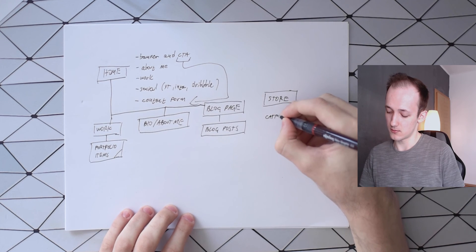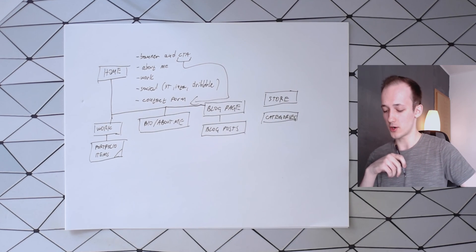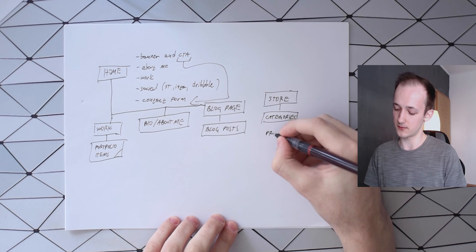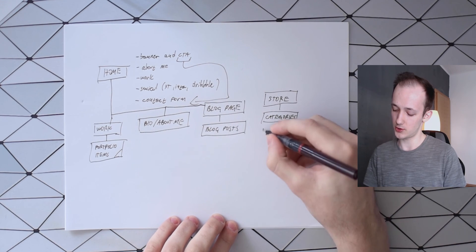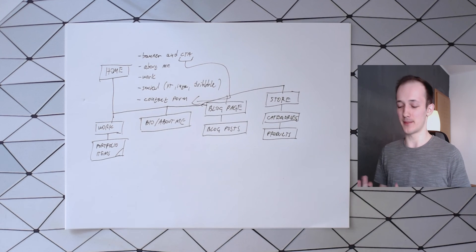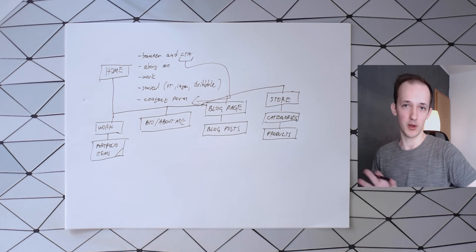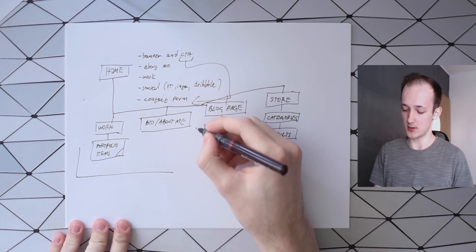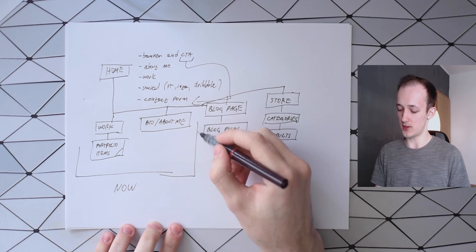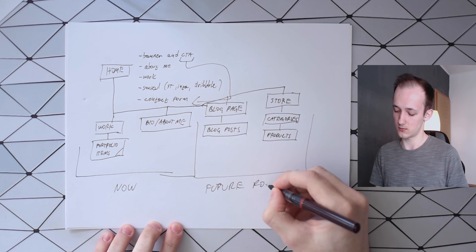For the store, I'd want product categories, and underneath those, individual products. The sitemap doesn't need to look pretty — it just needs to lay out everything I need. I'm drawing rectangles for categories and products to map how those pages would be structured.